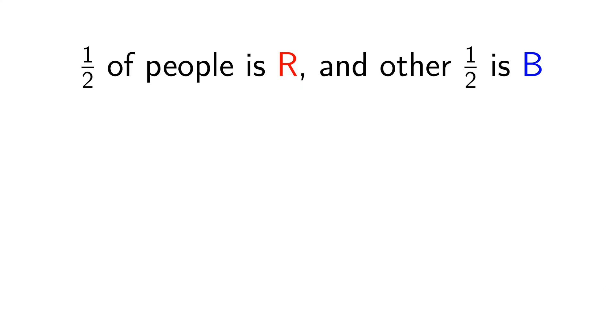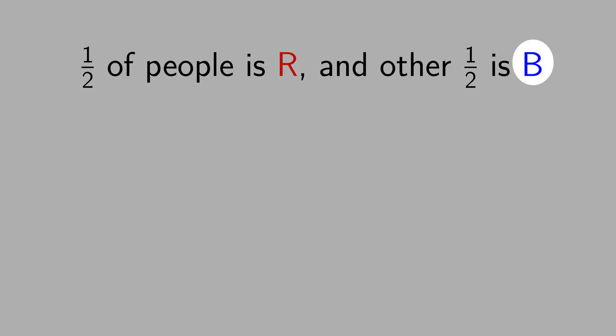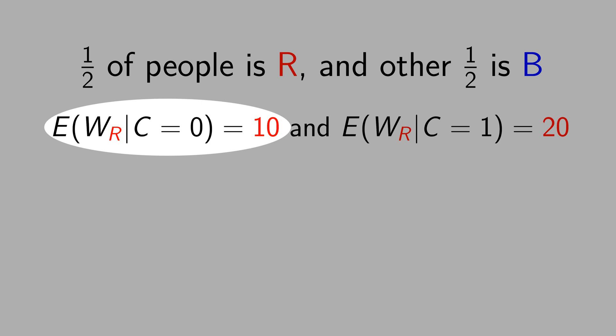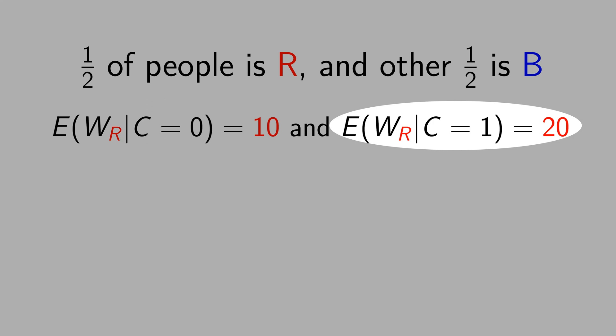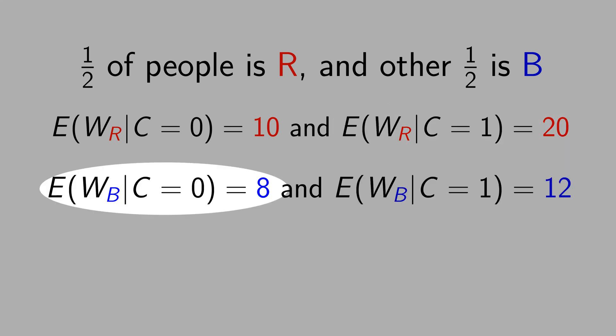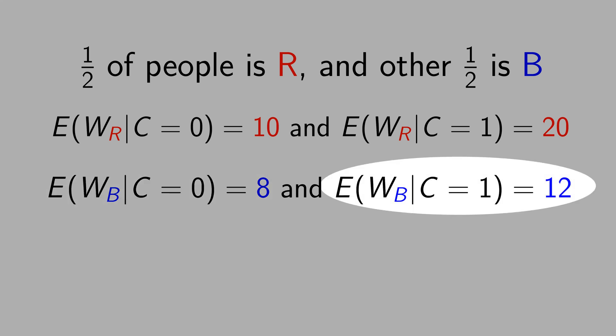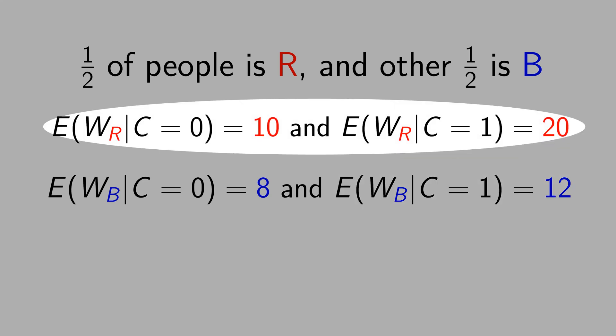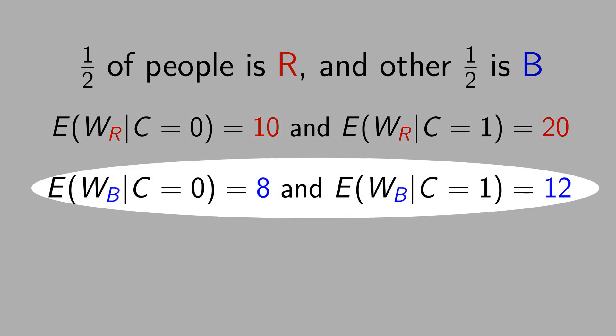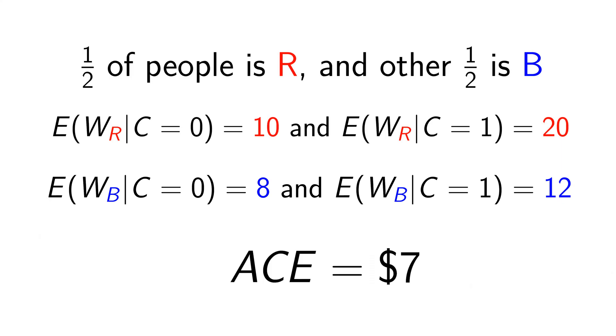Let's assume that in the world there are two types of people: red and blue, and they are equally distributed. The wage of red people without a college degree is $10, and if they have a college degree, they make $20. The wage of blue people without a college degree is $8, and if they have a college degree, they can make $12. The average causal effect of a college degree for red people is $10 ($20 minus $10), and for blue people it is $4 ($12 minus $8). If you average both 10 and 4, you get the average causal effect, which is $7.